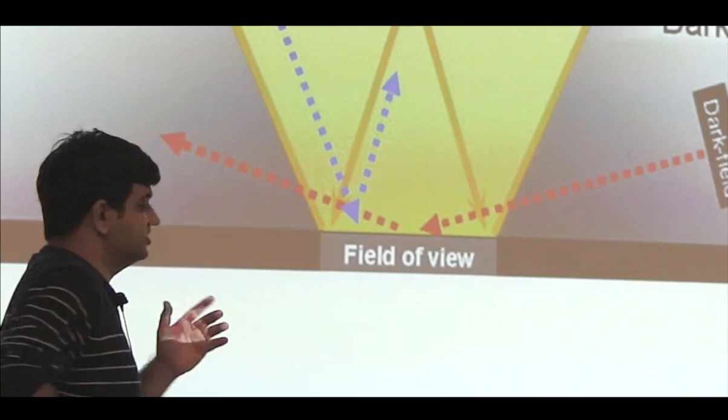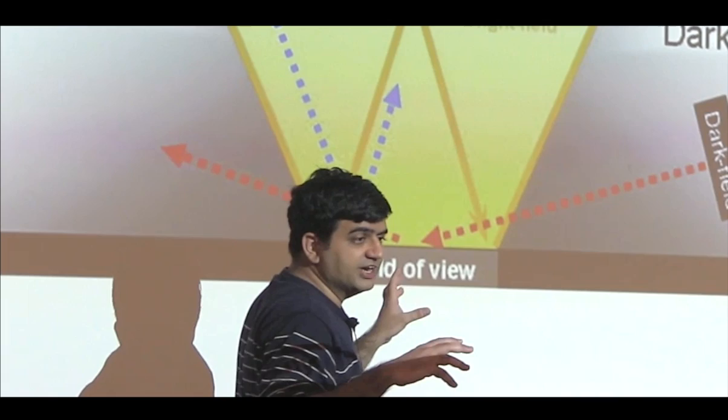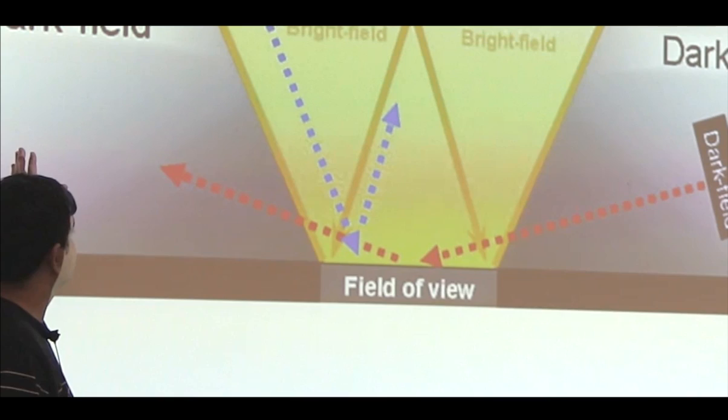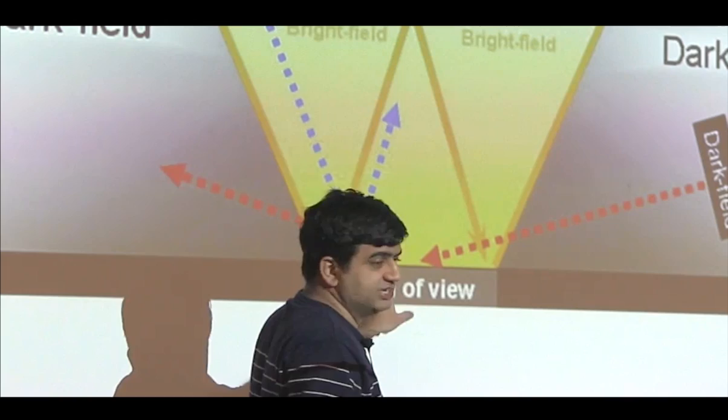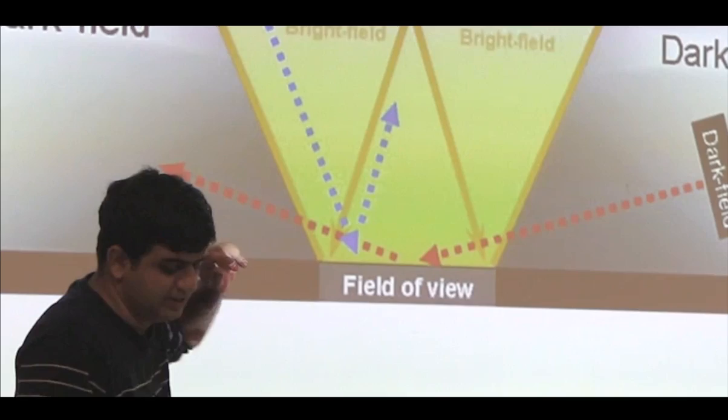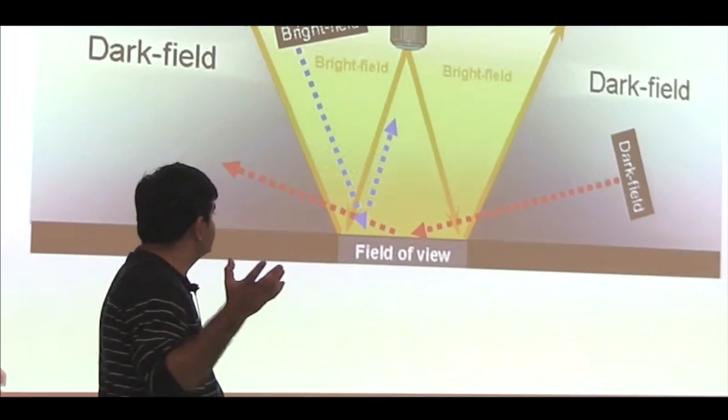So if you're looking for particles, like very small particles, you want to look for scattering of light. So if you're looking for scattering of light, a better place to look is in the dark field. So if you're looking for particles, it's preferred to look in the dark field microscope. If you're looking for features like steps, it's better to look in the bright field microscope. They show up better. So interference patterns show up better there. Scattered patterns show up better in a dark field microscope.